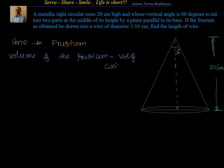Now what does volume of wire mean? Volume of wire means volume of a cylinder, because the wire is drawn into a diameter of 1/16 centimeter — we need to find the length. So this frustum, whatever metallic material we have, is converted into a wire of diameter 1/16 of a certain length. That means it becomes a cylinder. We are converting a frustum of a cone into a cylinder; both volumes are equal.